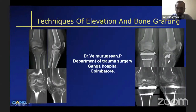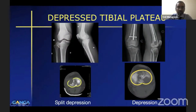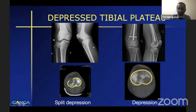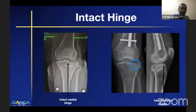Good evening. My topic today is techniques of elevation and bone grafting in depressed tibial plateau fractures. They can be either a split depression, where the cortical rim is broken, or a pure depression, where the cortical rim is still intact. We can divide the depression based on whether the hinge is intact.